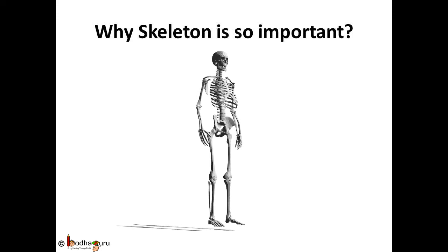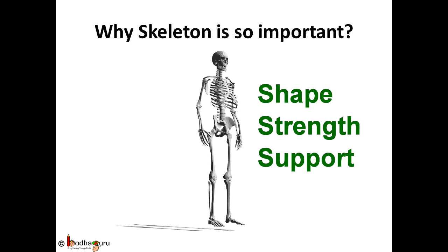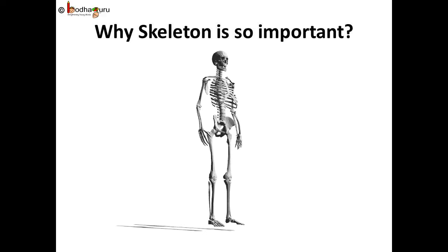Now you must have understood why skeleton is so important. It gives shape, strength and support to the body. Remember the three S: Shape, strength and support. It protects the delicate and soft inner vital organs. Like the skull protects your brain. The vertebrae surrounds the spinal cord and supports and protects it. The rib cage protects the heart and the lungs. The muscles are then attached to the bone which helps us to move. A bone has bone marrow in centre which helps in making blood cells.